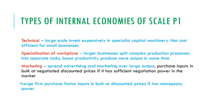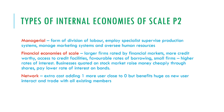There are different types of internal economies of scale. You have technical, which is when you invest in expensive specialist capital machinery — this is not cost-efficient for a small business. Specialisation of the workforce is another type, where the larger business splits complex production processes into separate tasks, boosting productivity and output. You'll have marketing, which is spreading your advertising and marketing costs over a large output so you can purchase inputs in bulk at a negotiated discounted price if you have sufficient negotiation power in the market — this is also known as monopsony power, which is essentially buying power.